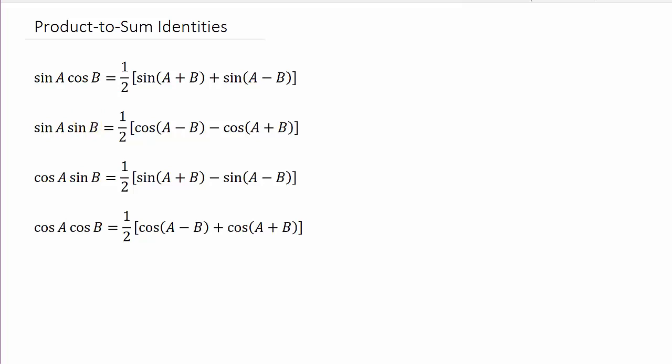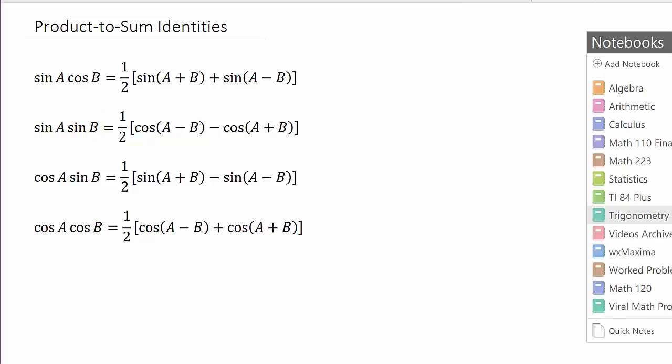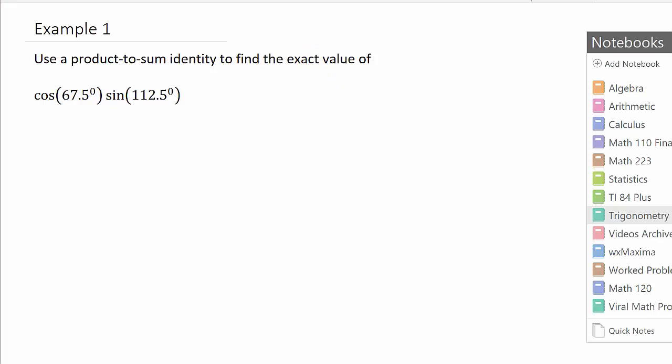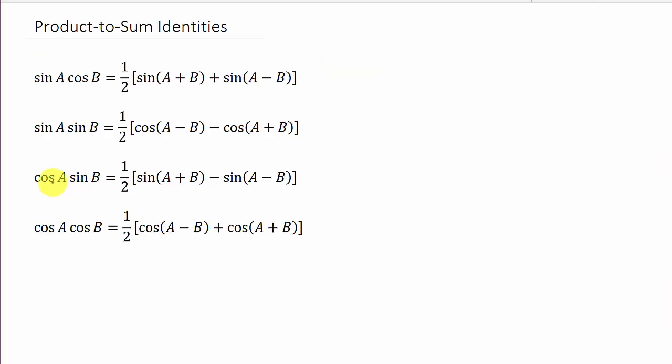So let's take a look at our example. Here we have cosine times sine, and you can see that the angle measures are different. We want to find the exact value. So if we look over here, we've got cosine times sine. You can see we're going to use this identity right here.